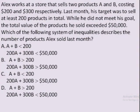You will find these types of questions very commonly in the SAT, in which there is a large text to read. Alex works at a store that sells two products A and B costing $200 and $300 respectively. Last month, his target was to sell at least 200 products in total. While he did not meet his goal, the total value of the products he sold exceeded $50,000. Which of the following system of inequalities describes the number of products Alex sold last month? In all four choices, there are two inequalities given, and both of them have to be correct for the answer to be considered correct.